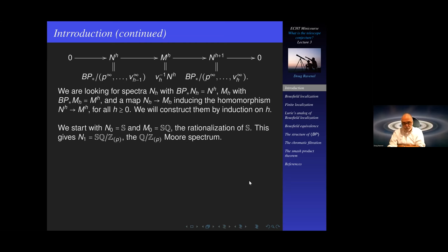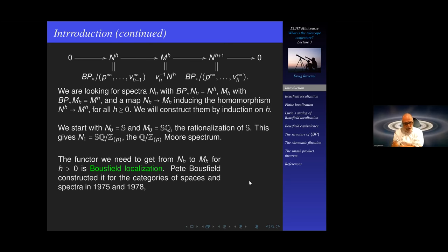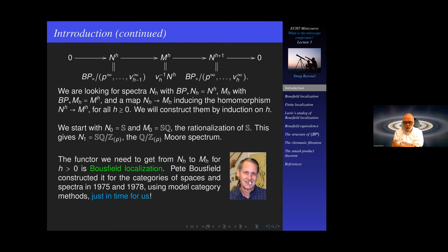The quotient would be the Q/Z localized at p Moore spectrum. Now, to do this for positive values of h, we need Bousfield localization — Bousfield localization will take us from N_h to M_h. Bousfield constructed this functor in the categories of spaces and spectra in papers published in 1975 and 1978, using model category theory methods.